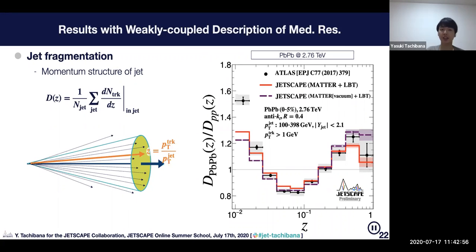Jet fragmentation function is also a popular observable to see medium response effect. Jet fragmentation function is the distribution of the momentum fraction of particles inside the jet divided by the transverse momentum of the entire jet.